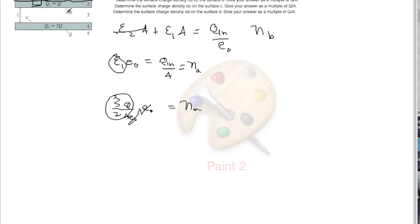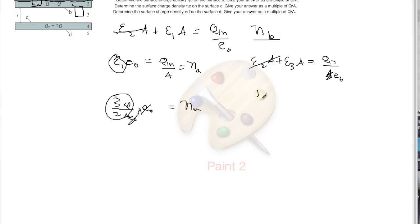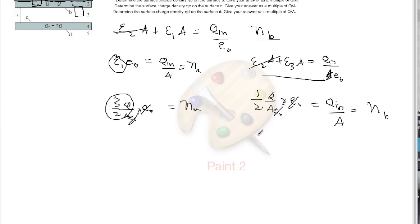For eta_b, we draw a Gaussian surface on the inner face of the top plate. The flux equation is E2·A + E3·A = q_enclosed over epsilon naught. E2·A goes away since E2 is zero. E3 times epsilon naught equals q_enclosed over A, which equals eta_b. Since E3 = 1/2 · q/(A·epsilon naught), the epsilon naught cancels and we get eta_b = 1/2 · q/A.